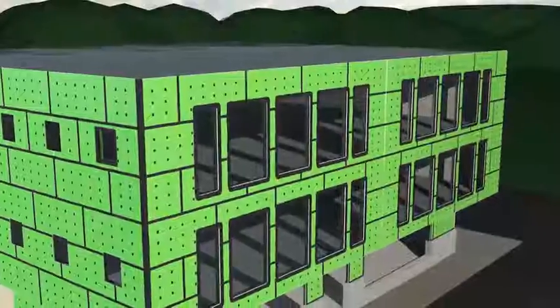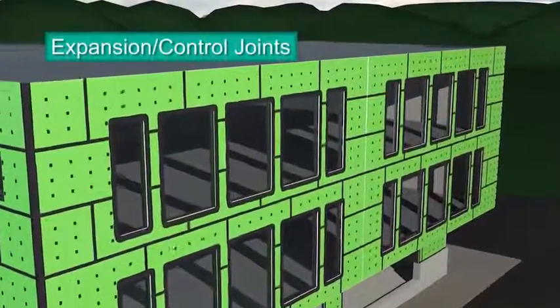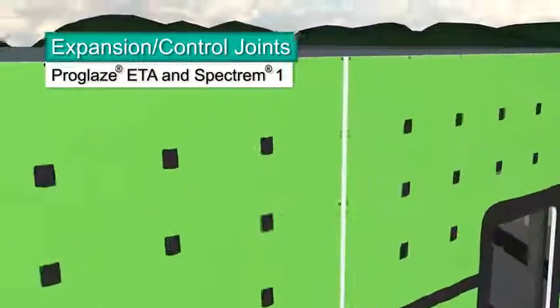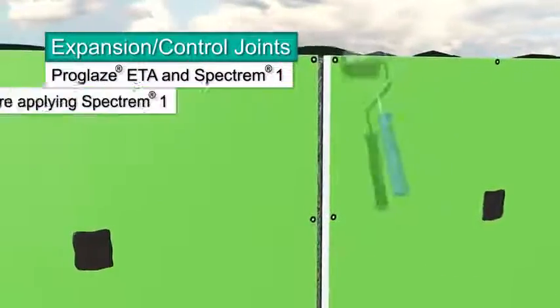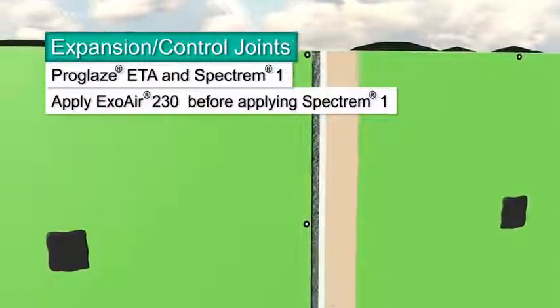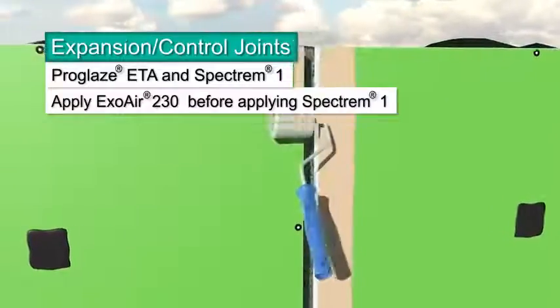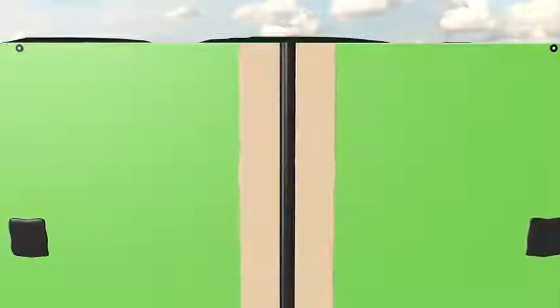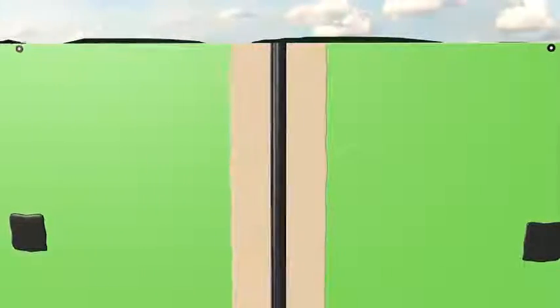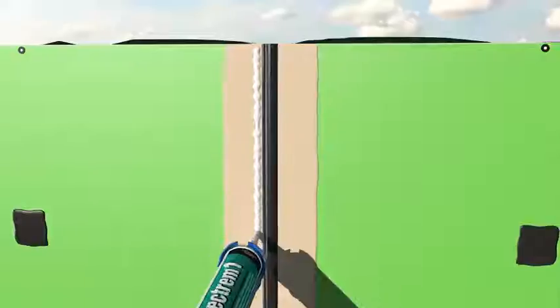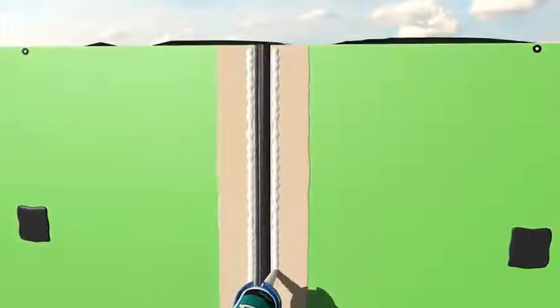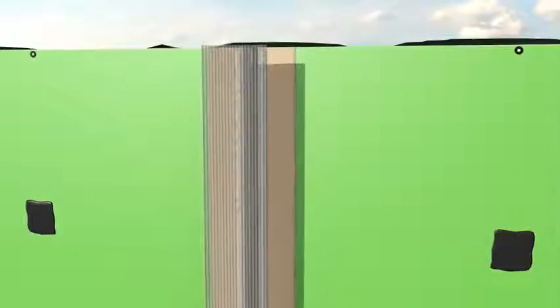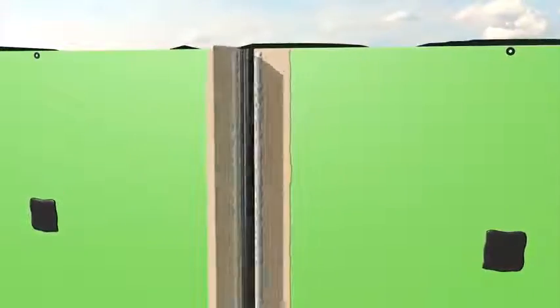Detailing expansion joints with brake metal and Dimonic 100 is one option. Using ProGlaze ETA connections and Spectrum 1 is a second option. Start by inserting backer rod in the joint so it's flush with the panel's face. Apply sufficient sealant to the edges of the Securock ExoAir panel. The ProGlaze ETA silicone material has a smooth and ribbed side.